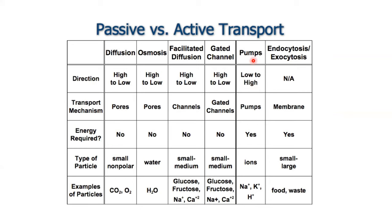For pumps — such as ion pumps — active transport moves ions against the concentration gradient. For endocytosis and exocytosis, concentration gradient direction is not applicable. These processes move food, waste, and larger particles like bacteria that cells want to destroy.